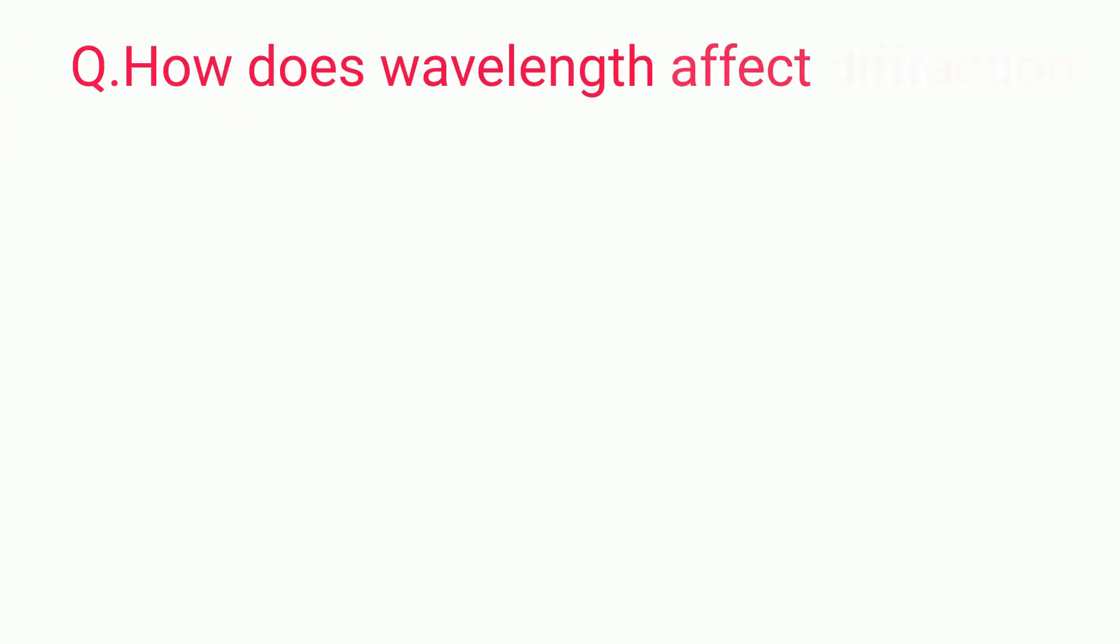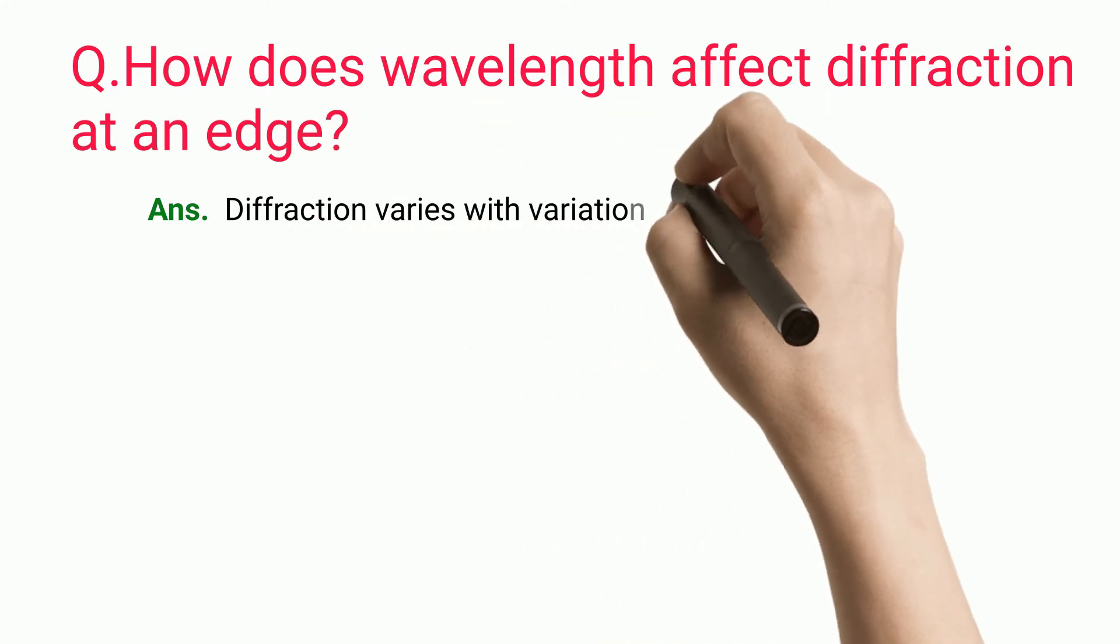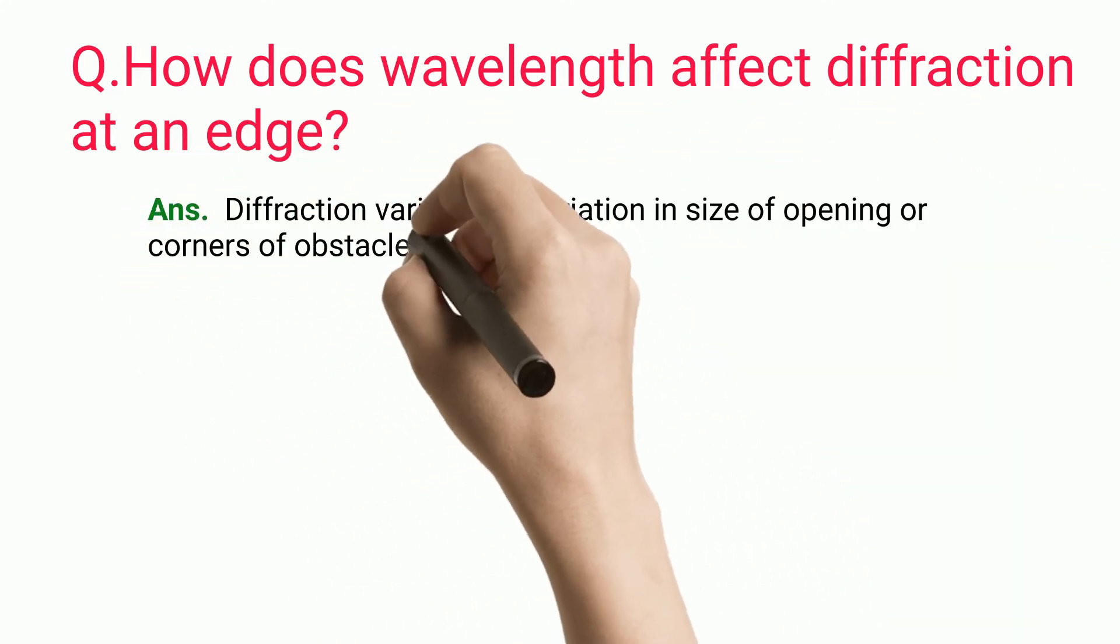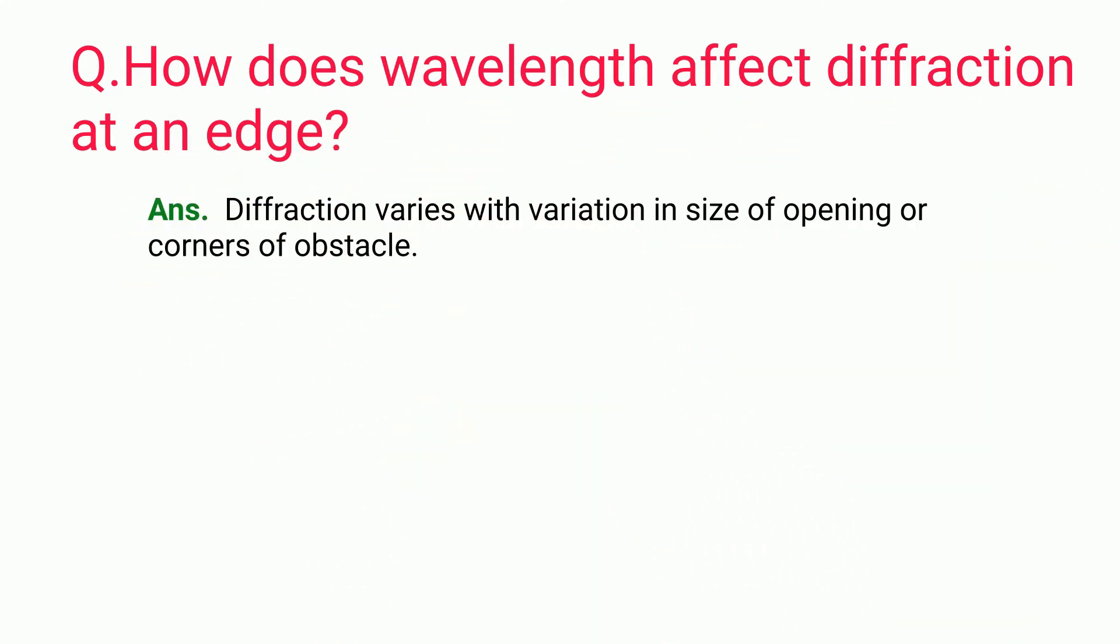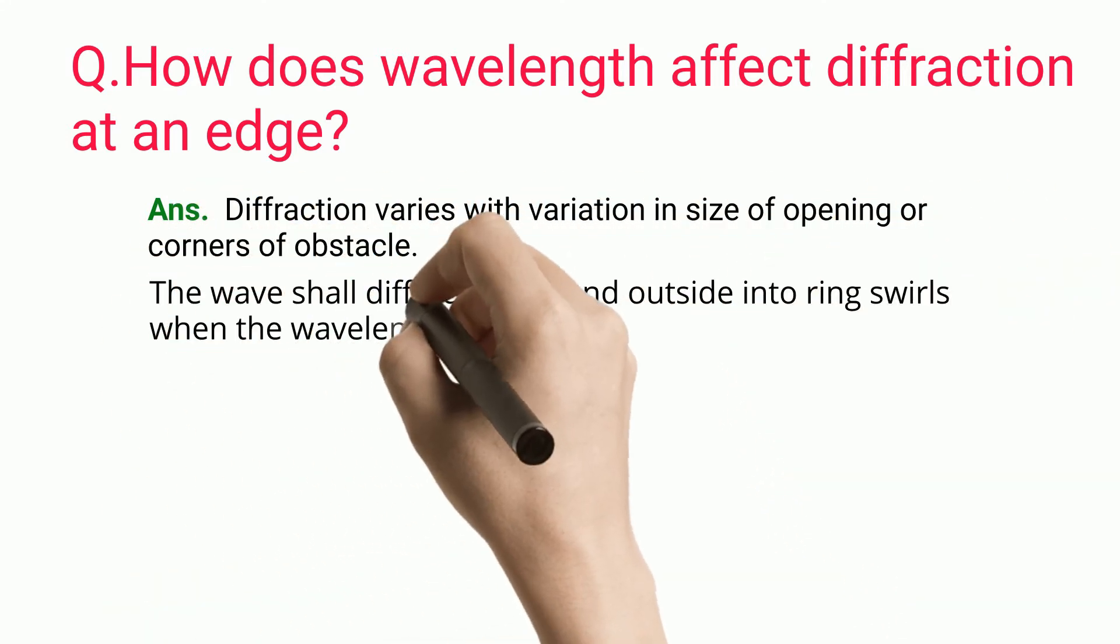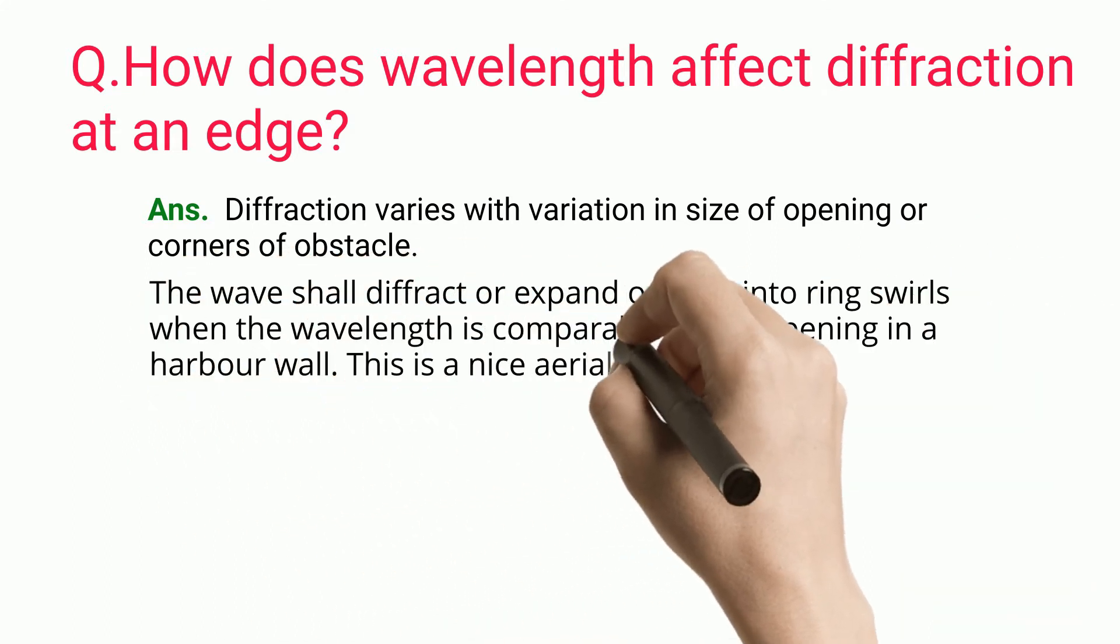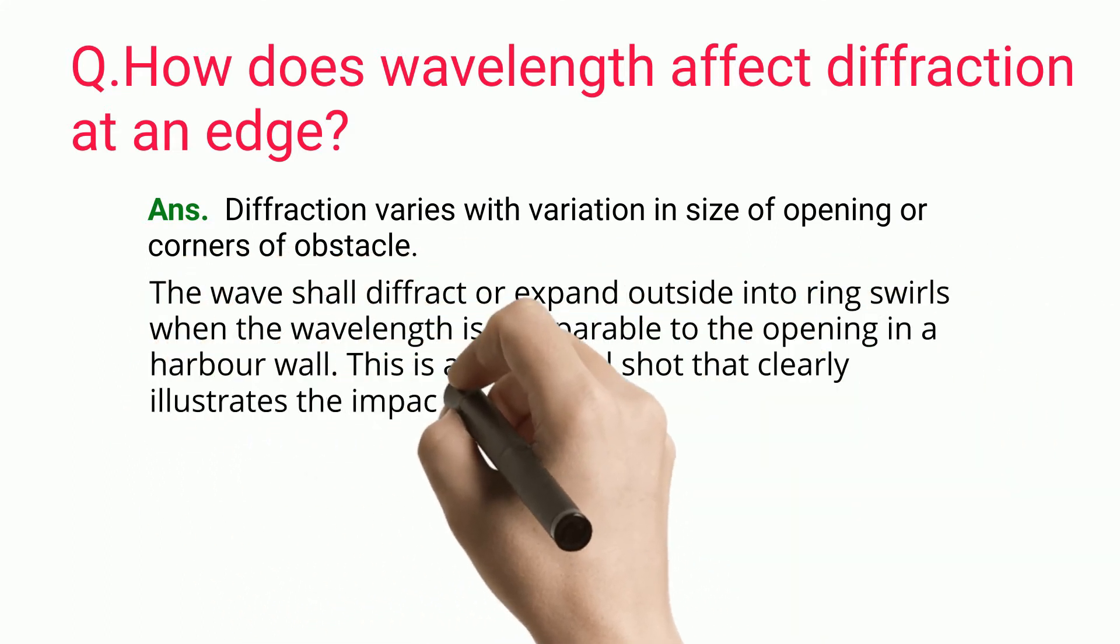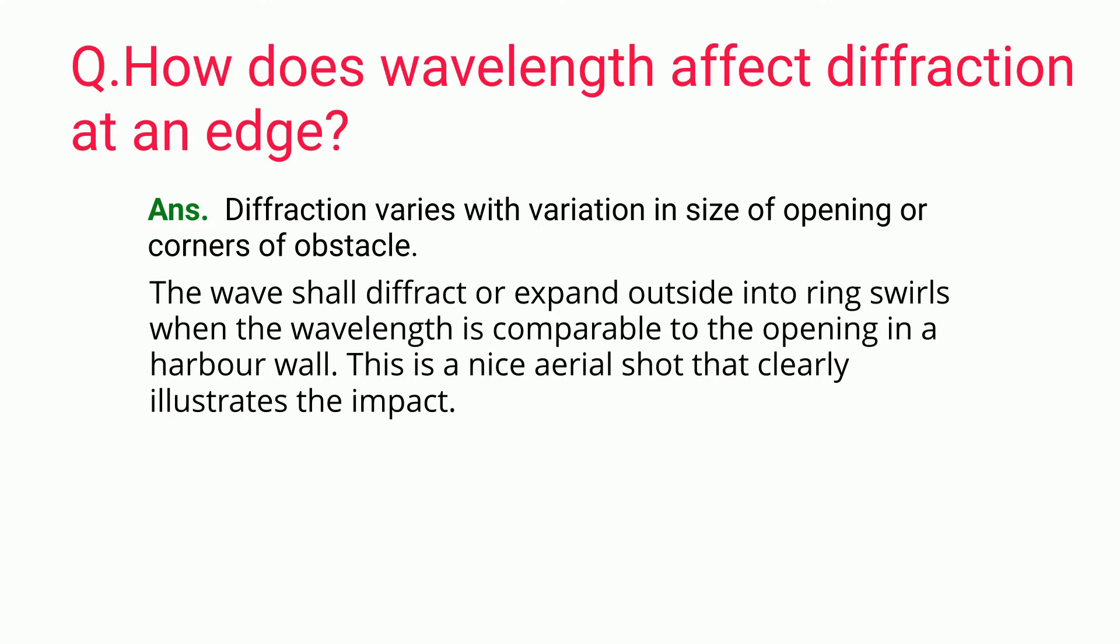How does wavelength affect diffraction at an edge? Diffraction varies with variation in size of opening or corners of obstacle. The wave shall diffract or expand outside into ring swirls when the wavelength is comparable to the opening in a harbor wall. This is a nice aerial shot that clearly illustrates the impact.